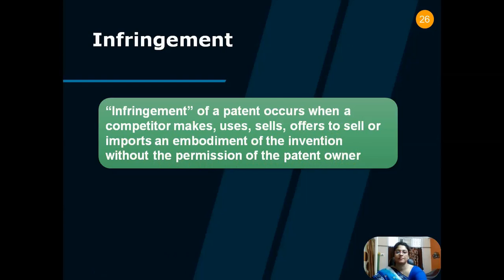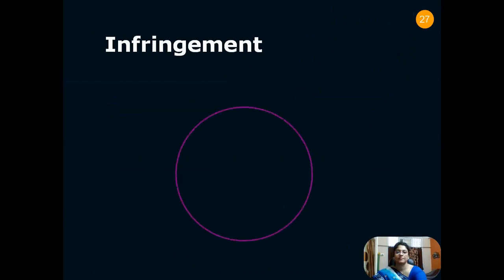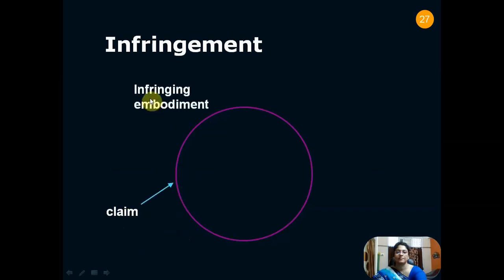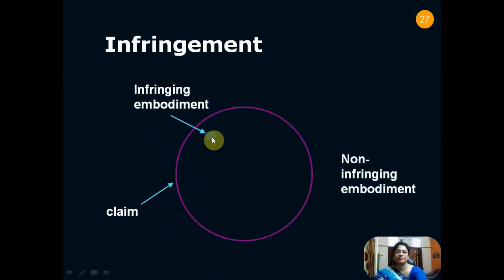There are several cases of patent infringement. Let us look at the diagrammatic representation of infringement. If we have a circle representing an embodiment and a claim boundary, any embodiment found to be within the claim is called an infringing embodiment. If an embodiment is found outside the claim boundary, then it is called a non-infringing embodiment. We should be careful while writing the claims for your patent — if the patent falls within the boundary, then it will be infringing; otherwise not.